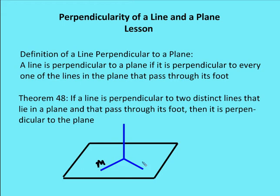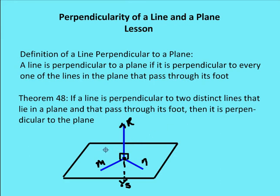So if I have lines N and M, and I have another line — let's call it RS — and line RS is perpendicular to lines M and N, then I know RS is perpendicular to every line that passes through the foot. The foot is the point of intersection of line RS and the given line in the plane. I can draw any number of lines through this point, and RS will be perpendicular to any one of those lines.